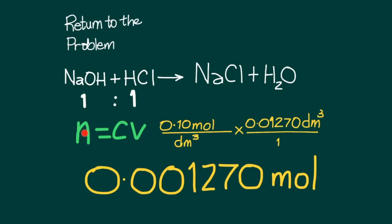Using the equation number of moles equals concentration multiplied by volume: The concentration of the standard solution of sodium hydroxide is 0.10 moles per dm³. The volume used based on the titration is 0.01270 dm³, converted from 12.70 ml. The final answer comes to 0.001270 moles, the number of moles present in 10 millilitres.